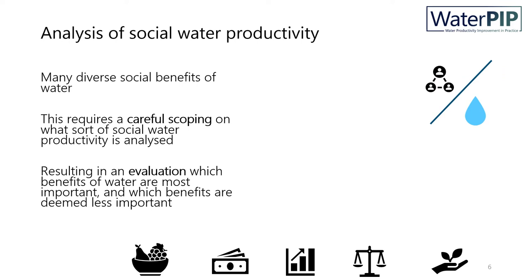Now you know that social water productivity may cover many diverse social benefits. How should you then be analysing all these benefits? I have two tips: one is careful scoping on what sort of social water productivity is analysed — meaning what kind of benefits you are analysing — and make very clear in your evaluation which benefits of water are most important in society and which benefits are deemed less important. Whereas economic water productivity is a fairly straightforward concept, social water productivity has many dimensions and interpretations.